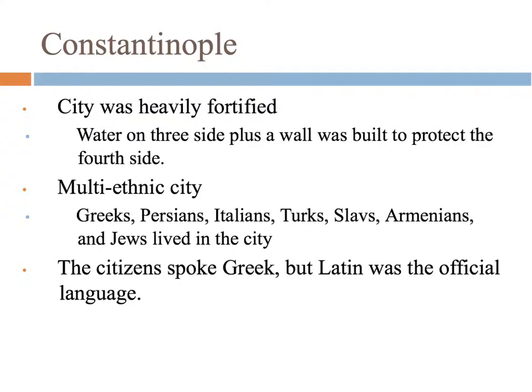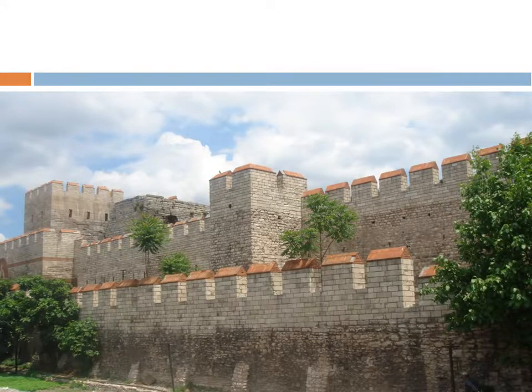Another thing you'll read about, especially in the chapter, is that Constantinople was a multi-ethnic city. People of all different ethnic groups lived in the Byzantine Empire and generally lived peacefully together. Another difference between it and the Western Roman Empire was that the official language of the Roman Empire was Latin, but people in the East tended to speak Greek and used that as their official language. Officially when it was still under the Roman Empire it was Latin, and then they changed it over time. And this shows you the remnants of one of those city walls — it was very well defended.